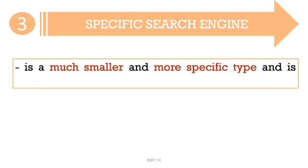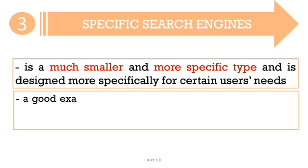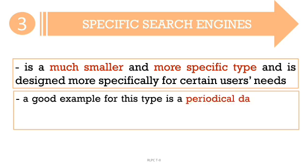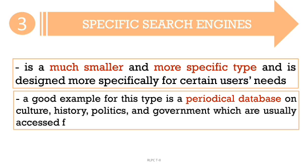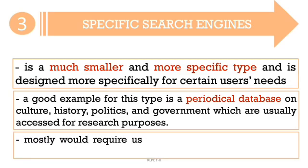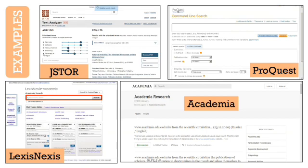Specific search engines, as the name implies, are a much smaller and more specific type and are designed more specifically for certain users' needs. A good example for this type is a periodical database on culture, history, politics, and government, which are usefully accessed for research purposes. Some examples under this type mostly would require user enrollment or subscription to allow unlimited access.